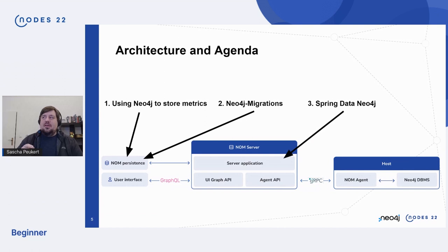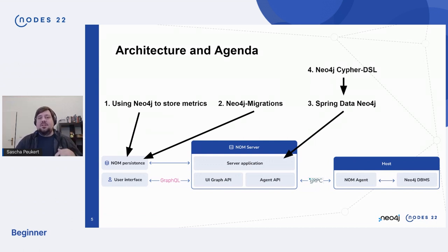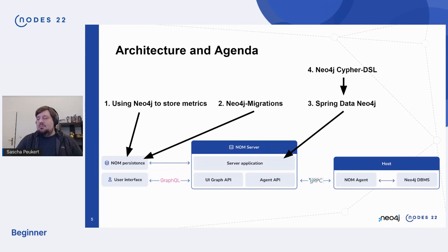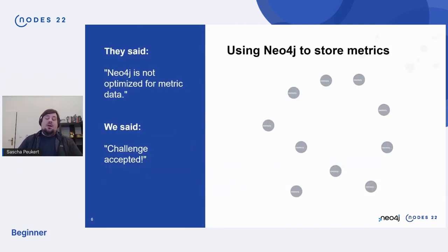That's interesting, right? There's a tool called Spring Data Neo4j that makes our life in the NOM server so much easier. And to make it even easier to use Spring Data Neo4j, we also use the Cypher DSL, which is still a hidden gem. So let's talk about those four things now, starting with how to use Neo4j to store metrics.